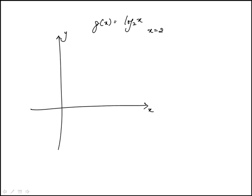So when x is 2, this would be 1. So somewhere here, when x is 1, this would be 0. And then as we go to values less than 1, it's going to become negative. Something like that.